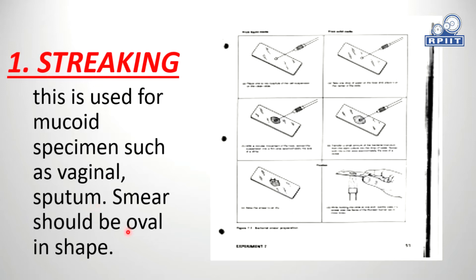The smear should be oval in shape. See here — there is an oval shape smear on the glass slide. There is a glass slide and a sterile inoculating loop. Put the smear on it with the help of the inoculating loop, then spread the smear in an oval shape and heat fix it.